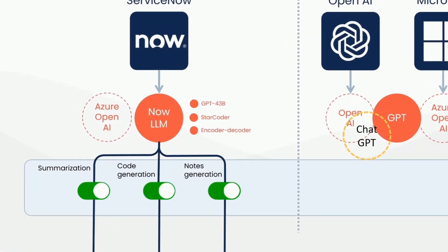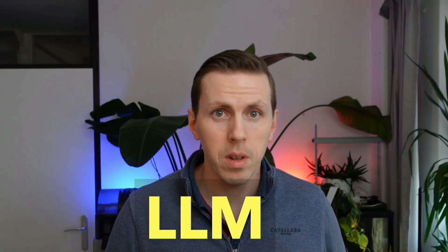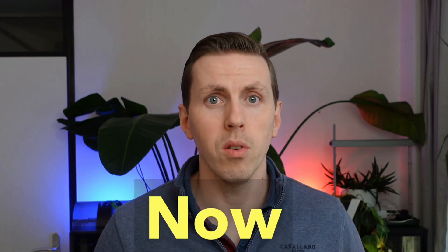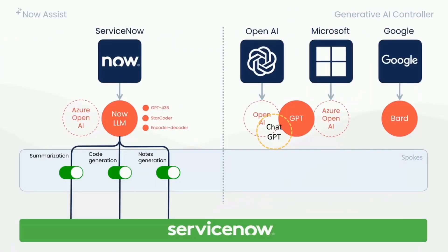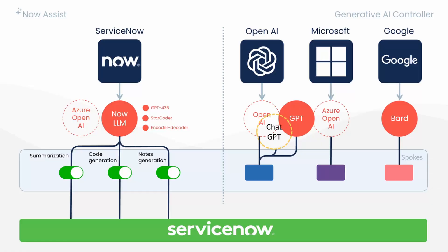For some cases, it still uses Azure OpenAI that is also trained and customized for ServiceNow purposes. In the description below, you can find more details on which LLMs are available, how the NowLM came to play, and the different types of LLMs used by NowAssist. On the other side, the Generative AI controller allows us to integrate with OpenAI, Azure OpenAI, and Google BART. ServiceNow provides you with spokes, and you can, for example, enable summarization, code generation, and sentiment analysis by integrating with one or more of those LLMs.